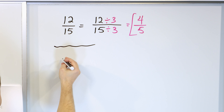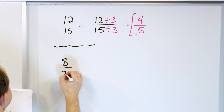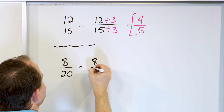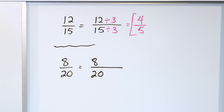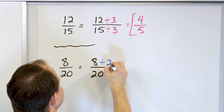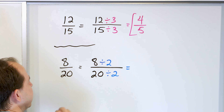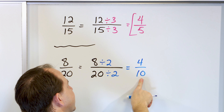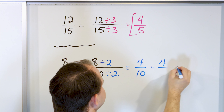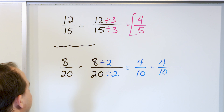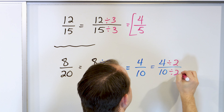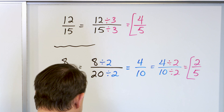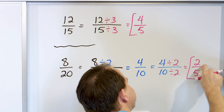What about eight-twentieths? I know there are other things I can divide by, but let's say I just notice they're even numbers. I'll divide by two. Eight divided by two is four, twenty divided by two is ten. But is this simplified? No, because it's still even numbers. So I write four-tenths again and divide both by two. Four divided by two is two, and ten divided by two is five. The answer is two-fifths. There is nothing I can divide further to make this simpler.